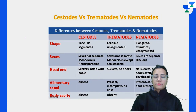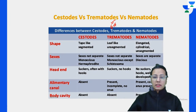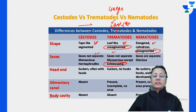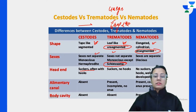Now we'll start with trematodes. The basic features: trematodes are leaf-like and unsegmented, whereas nematodes are tape-like, segmented, and elongated. Trematodes and nematodes are unsegmented and sexes are not separate - but one exception is Schistosoma, which has separate sexes (diecious). In terms of heads and hooks: suckers with hooks are present in cystodes, no hooks or suckers in trematodes, and no hooks in nematodes.